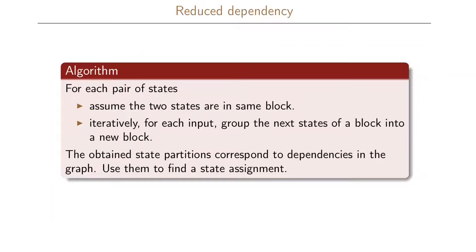We can obtain the reduced dependency state assignment by following this algorithm. For each pair of states, first assume that the two states are in the same block, and then iteratively, for each input, group the next states of the block into a new block. The obtained state partitions correspond to dependencies in the graph, and then we use these partitions to find a good state assignment.